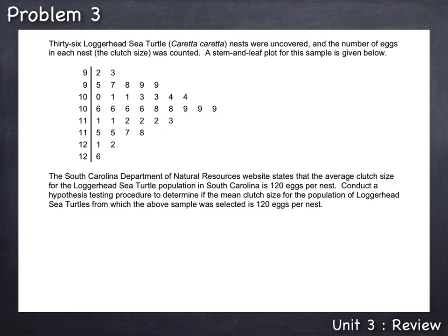36 loggerhead sea turtle nests were uncovered and the number of eggs in each nest, which is called the clutch size, was counted. A stem and leaf plot for this sample is given below. The South Carolina Department of Natural Resources website states that the average clutch size for the loggerhead sea turtle population in South Carolina is 120 eggs per nest. Conduct a hypothesis testing procedure to determine if the mean clutch size for the population of loggerhead sea turtles from which the above sample was selected is 120 eggs per nest.